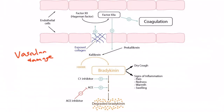Think of vascular damage, which often occurs as a result of the initial insult in acute inflammation, as causing exposed collagen. This collagen, being exposed to free-floating factor XII, will cause the activation of factor XII, giving us factor XIIa. Factor XIIa can then activate the coagulation cascade — we can see how the kinin system and the coagulation system intersect. Focusing on the kinin cascade, factor XIIa converts prekallikrein to kallikrein, and kallikrein then acts on high molecular weight kininogen to convert it to bradykinin.